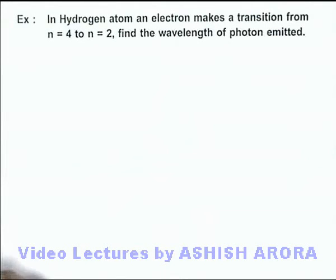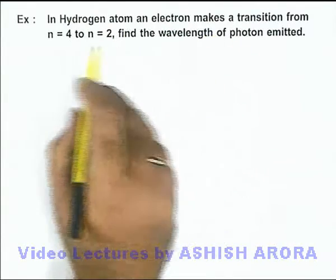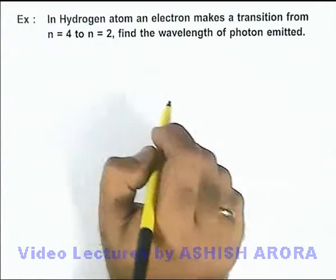In this example, we are given that in a hydrogen atom, an electron makes a transition from n = 4 to n = 2, and we are required to find the wavelength of the photon emitted.